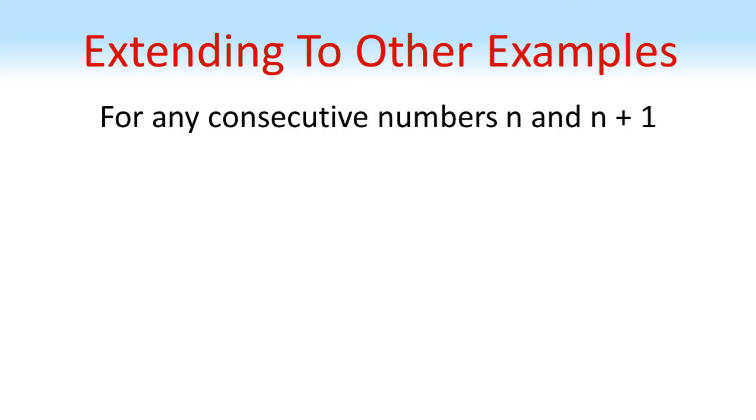Now we can extend this to other examples. In our first example, we use the consecutive numbers 999 and 1000. Now let's find the general form for this. Let's take consecutive numbers n and n plus 1.